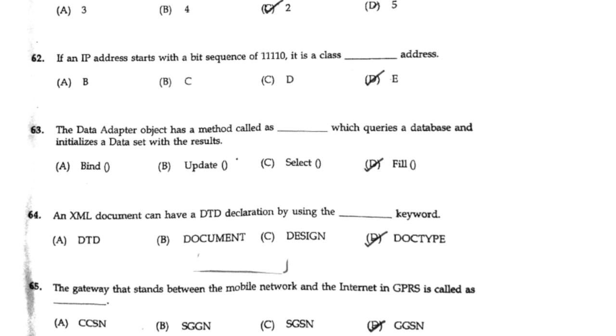The gateway that stands between the mobile network and the internet in GPRS is called GGSN. Answer option D.